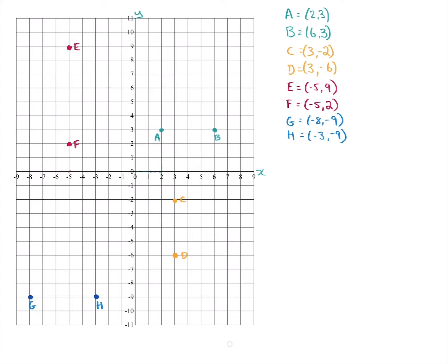Let's look at A and B as an example. We can draw a line from A to B — what is the distance between them? There are lots of different ways to do this. There's a special formula we'll learn later, and you can also subtract the two coordinates. A and B are both at level three on the y-axis, so they are going straight across from each other — it's a horizontal line.